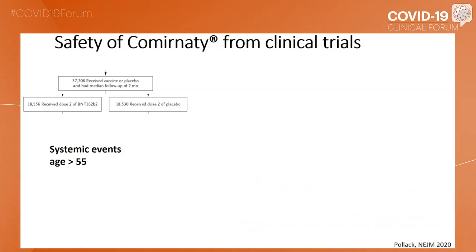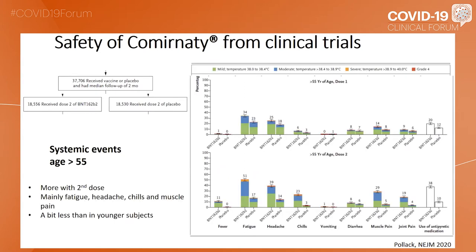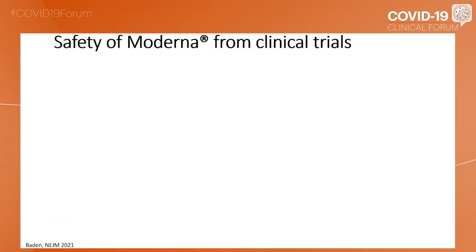If we focus on the age over 55, you see that here again the side effects were noted more with the second dose, and were mainly fatigue, headache, chills, and muscle pain — and a bit less than in younger subjects, as shown in the previous slides.